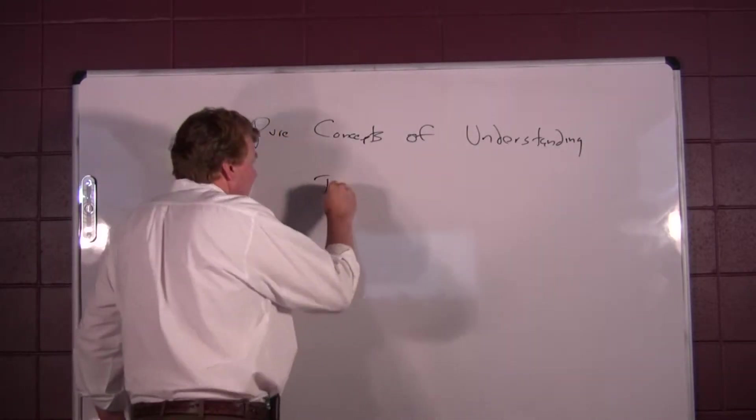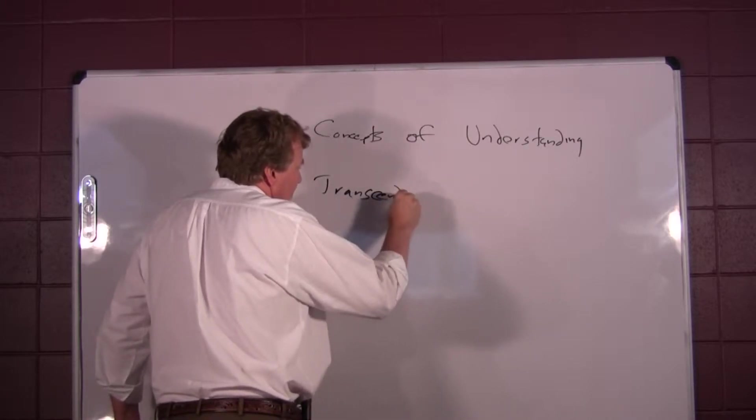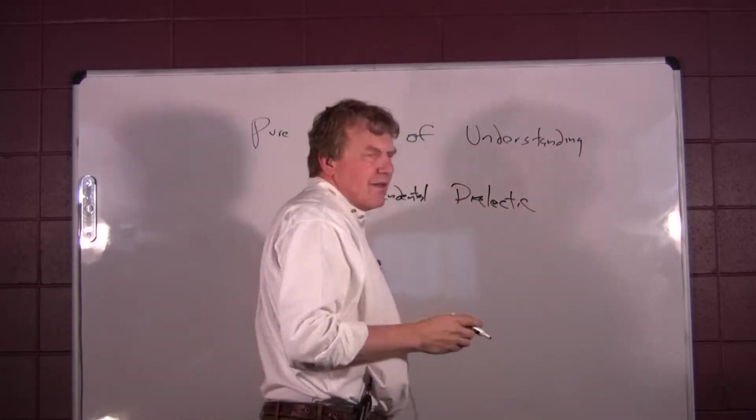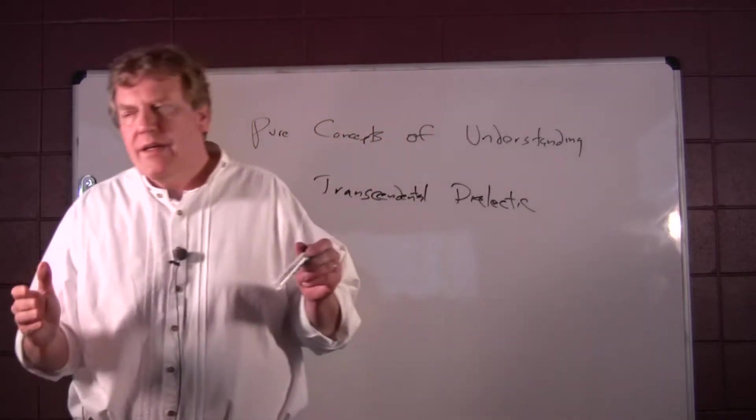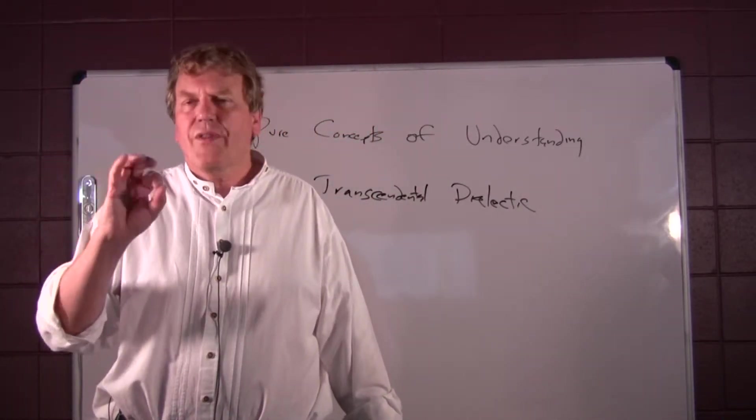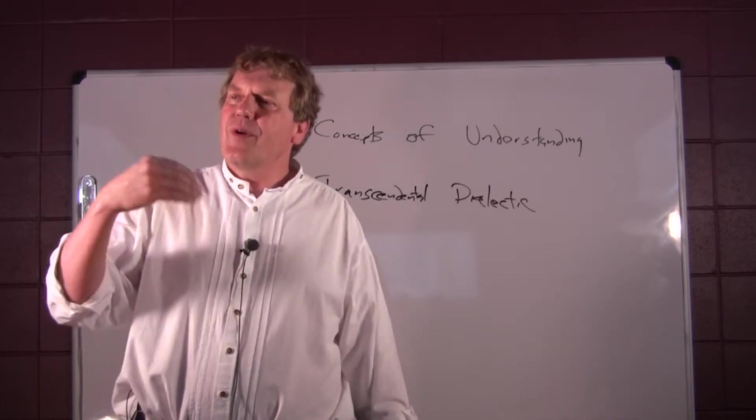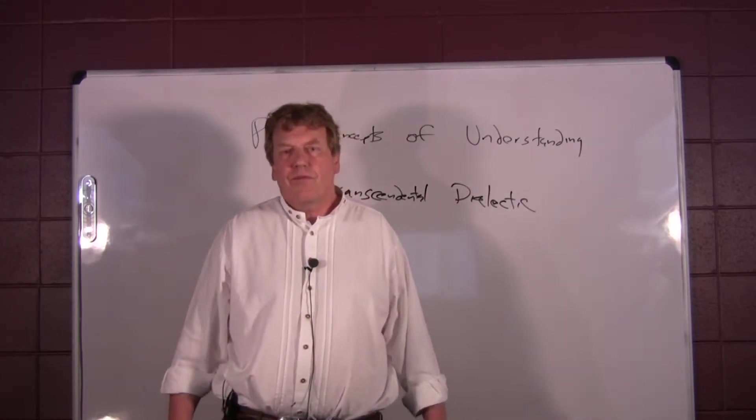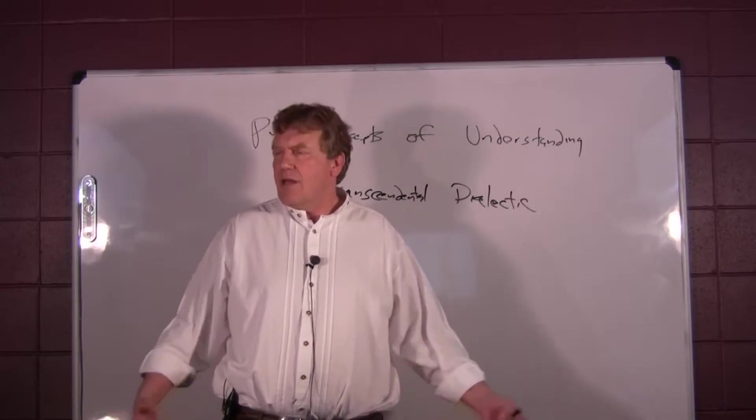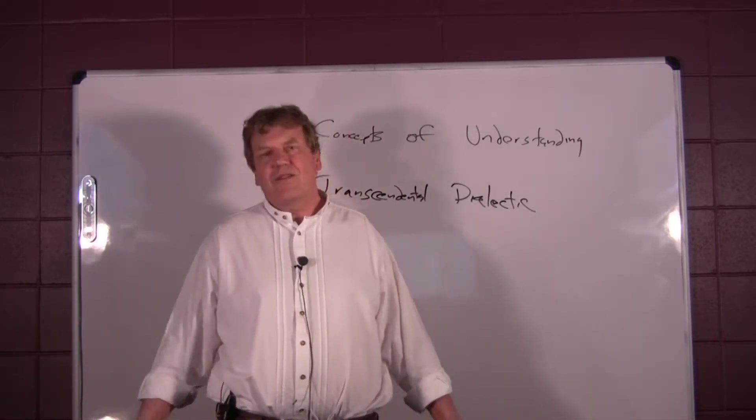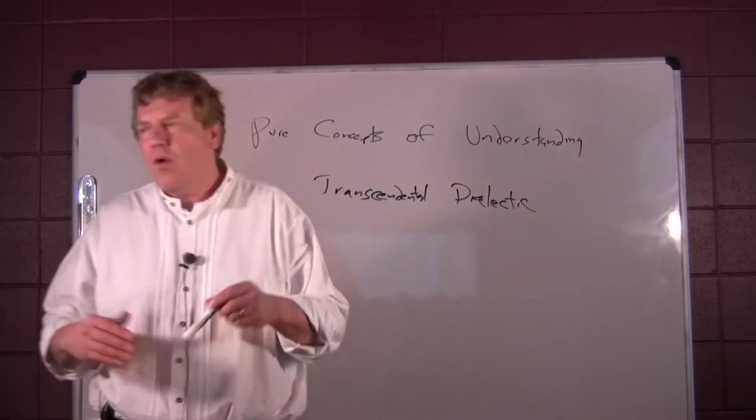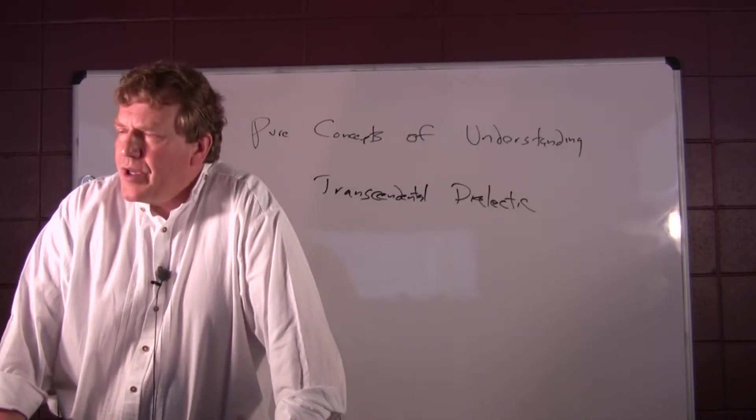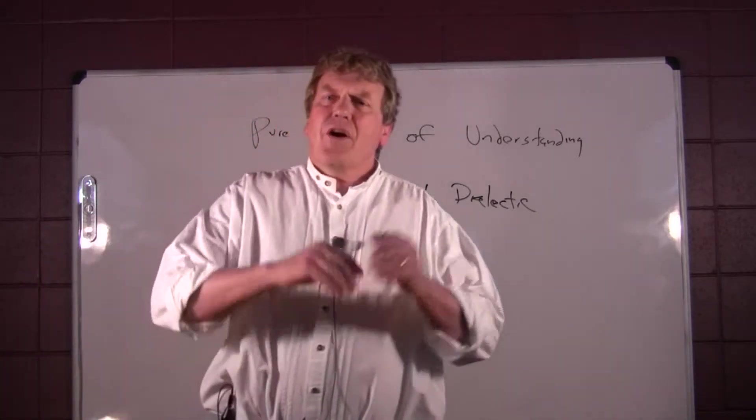So, here now, in the Transcendental Dialectic, Kant is going to show what happens to reason when we take these categories outside their proper bounds. And in a very important section called the Antinomies of Pure Reason, he shows that when you take these categories of substance and causality outside their proper bounds, you can prove to the necessity of a first cause for the universe, and you can prove to the non-necessity of a first cause of the universe. You can prove the immortality of the soul, or you can prove that the soul is not immortal. You can prove that the cosmos has a unity, or you can prove that it has no unity.